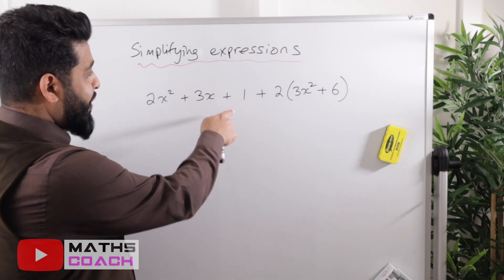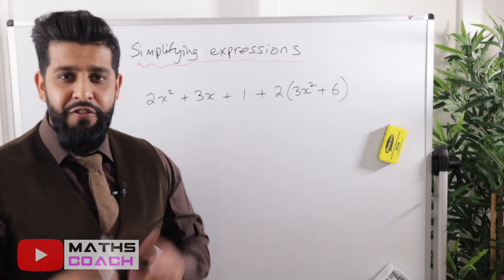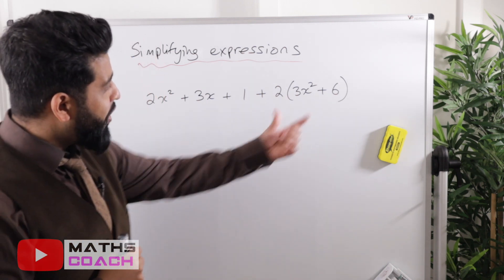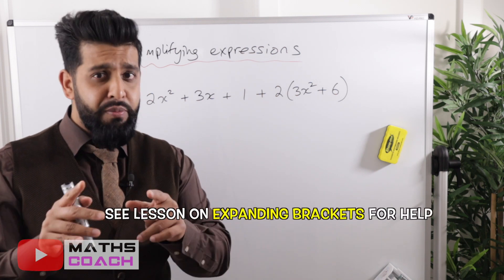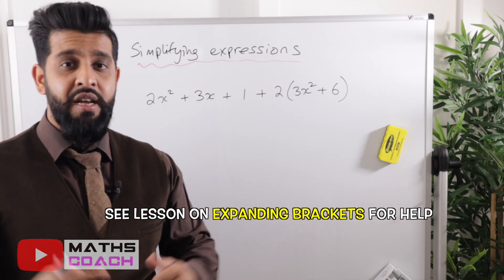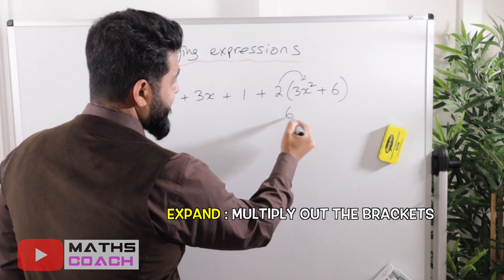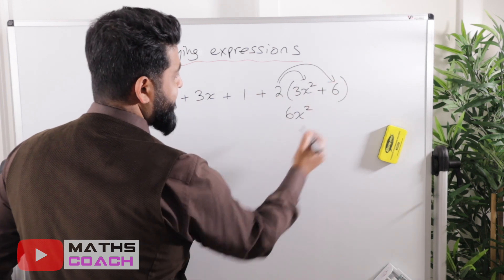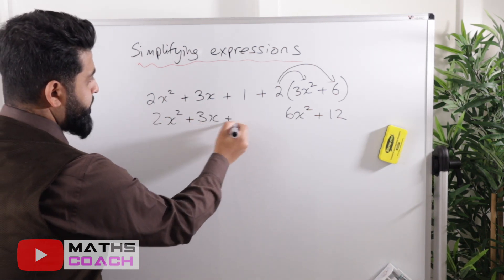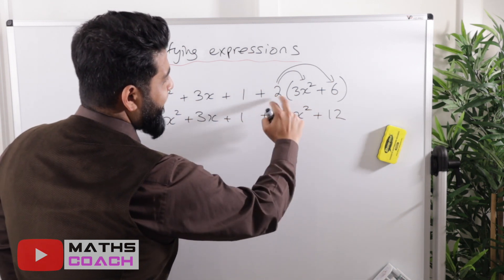Here's a question for you to try: 2x² plus 3x plus 1 plus 2 times the bracket (3x² plus 6). Pause the video and try it yourself. When you come back, notice we have a bracket to deal with first — we need to expand it. Expanding: 2 times 3x² gives 6x², and 2 times 6 gives plus 12. Then we copy down the rest of the expression alongside it.